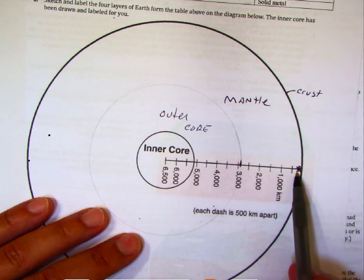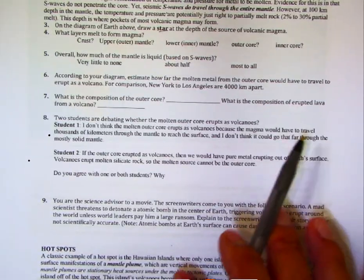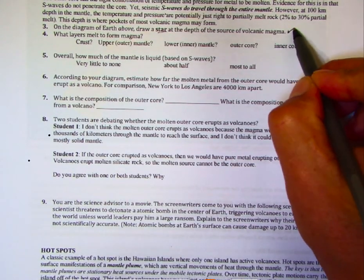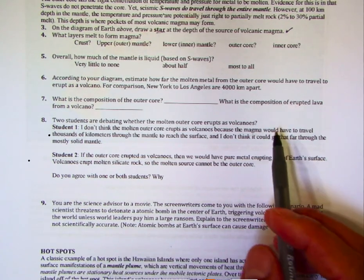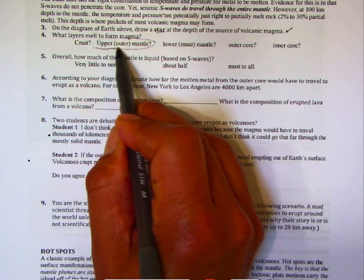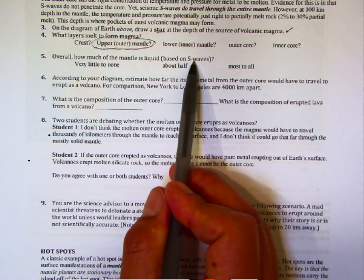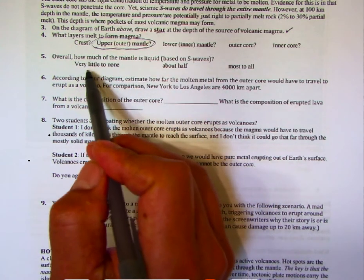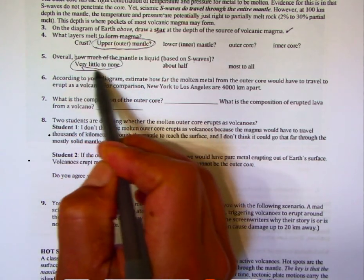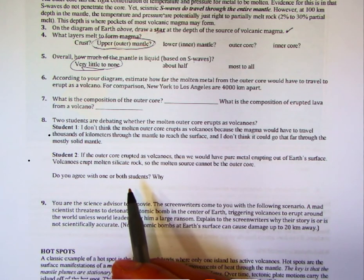Magmas come from the uppermost mantle — either the asthenosphere or the mantle lithosphere. The layers that melt to form magma are really the upper outer mantle. Overall, since S-waves travel through the mantle, the mantle must be pretty much solid — very little to none of it is liquid, maybe 1% in the asthenosphere.